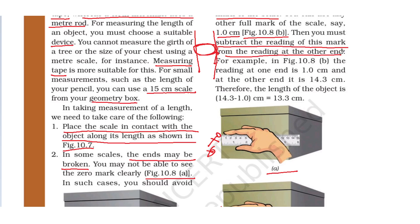Then subtract the reading of the starting mark from the reading at the other end. For example, in figure 10.8B, the reading at one end is 1.0 cm and at the other end it is 14.3 cm. Therefore, the length of the object is 14.3 − 1.0 = 13.3 cm. This gives the actual length.